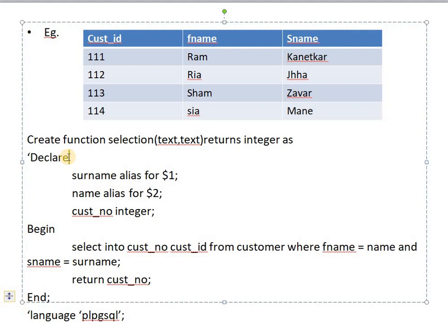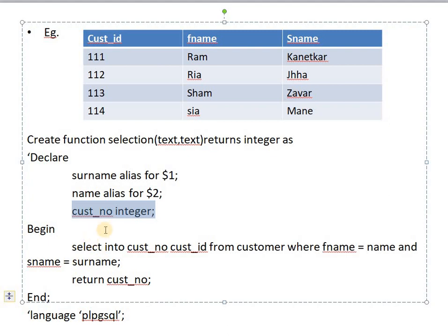Inside the function body we have a declaration section, indicated by the DECLARE keyword. Here I declare three variables: 'surname' to store the last name provided by the user, 'name' to store the first name provided by the user, and 'customer_number' of type INTEGER, which will store the customer ID fetched from the database when the name and surname match.